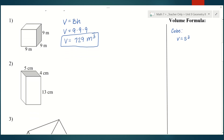Number two — we have a rectangular prism. Using the idea that I can find the area of the base and multiply it by the height to get the volume: the base is this rectangle, so its area is five times four. I take the area of the base and multiply it by the height of the rectangular prism, which is 13. That gives me 260 cubic centimeters.